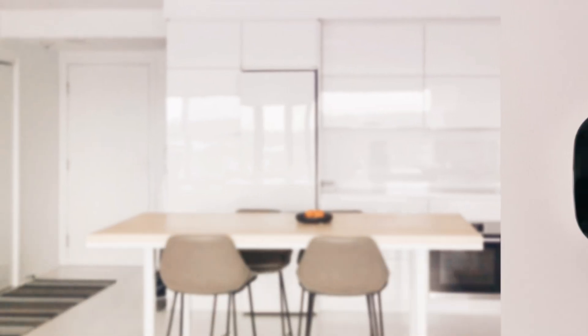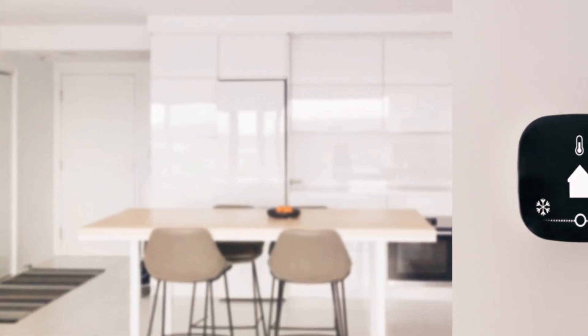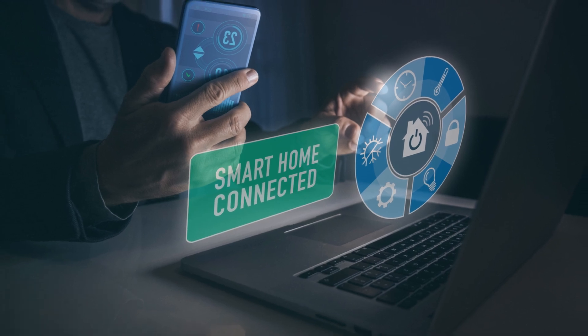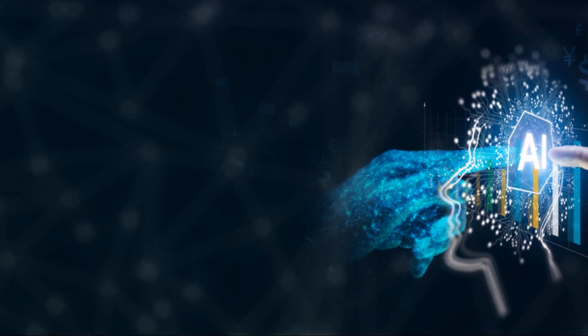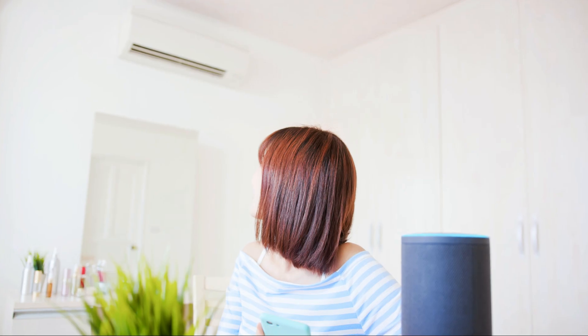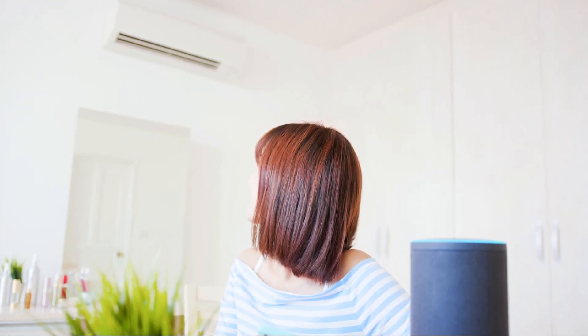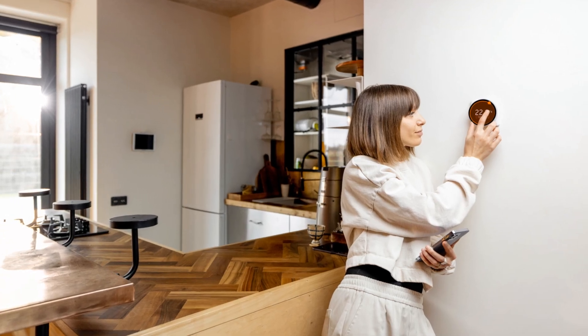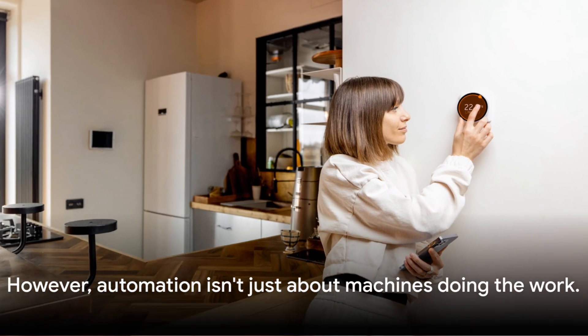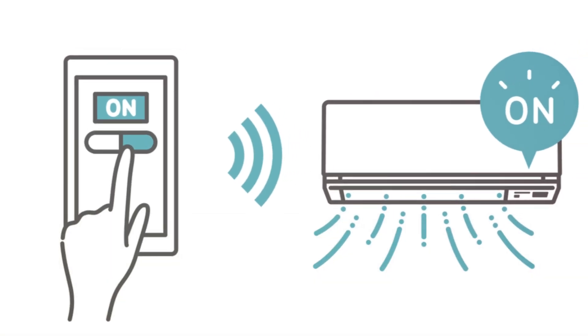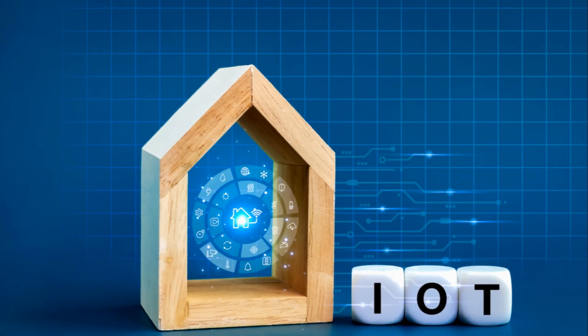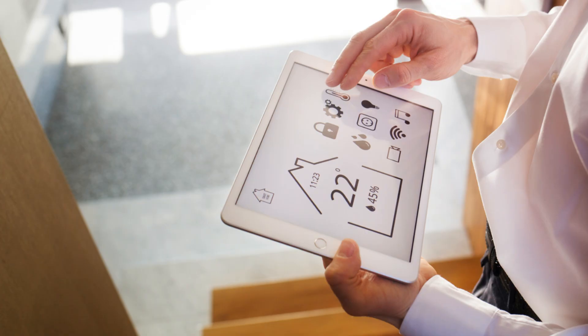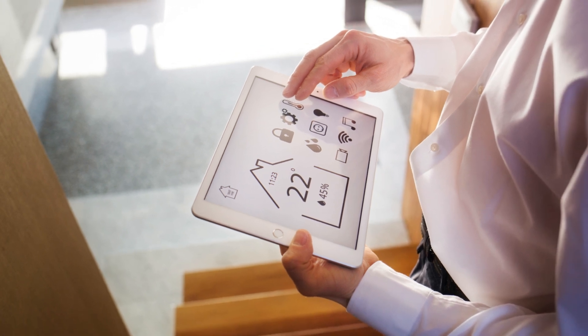But automation isn't just about industries, it's also making our everyday lives easier. Think about your smartphone's virtual assistant, the smart thermostat that adjusts your home's temperature, or the online recommendation system that suggests what to watch or buy next. These are all examples of automation at work, streamlining our routines and making our lives more convenient. However, automation isn't just about machines doing the work. It's about augmenting human capabilities, freeing us from mundane tasks and allowing us to focus on more creative, meaningful work. It's about artists having more time to create, researchers having more time to discover, teachers having more time to inspire.